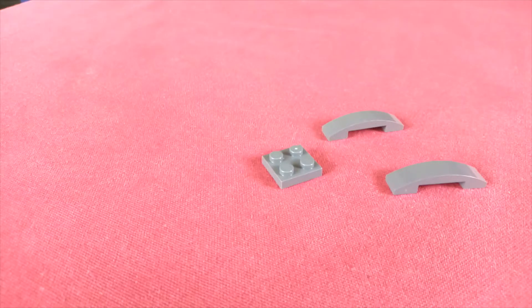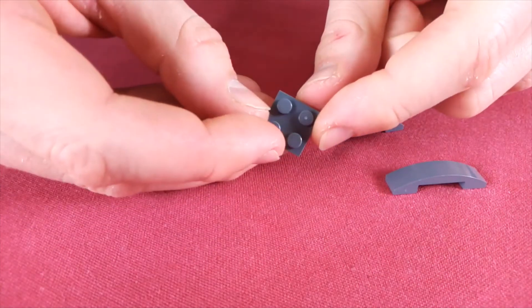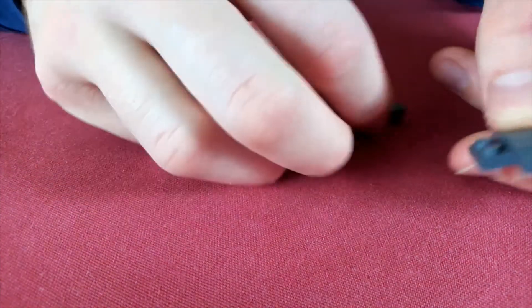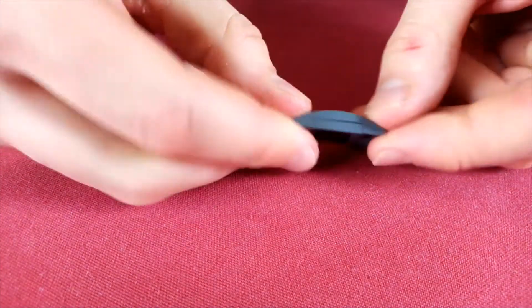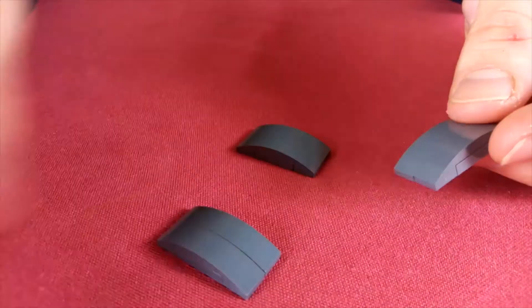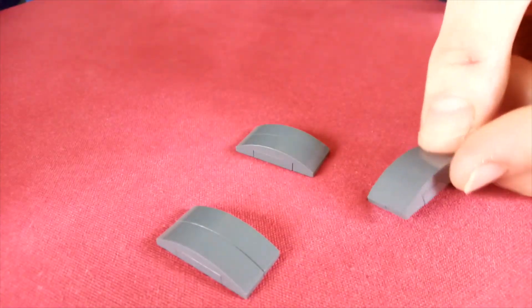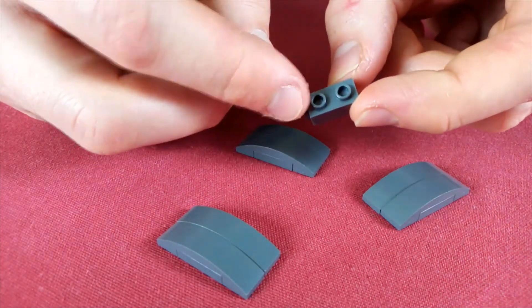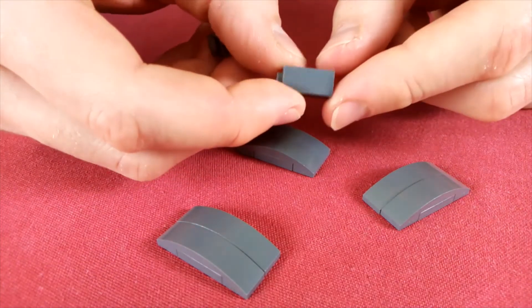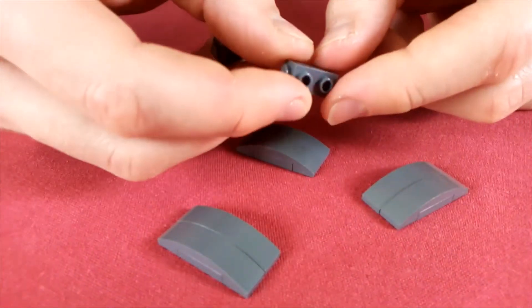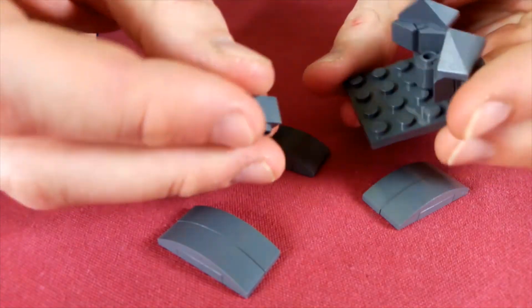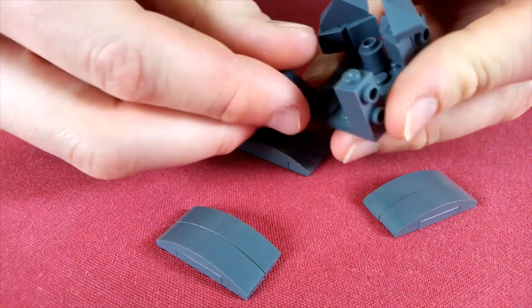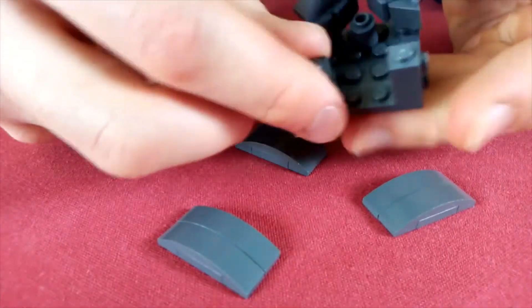Now for the sides of the turret, take a 2x2 plate and two of these curved pieces which sit on top of the plate just like that. You'll want three of these, they're going to make up the side of your turret. You're also going to want two of these SNOT bricks with the two studs on one side and smooth on the other three sides. These are going to sit in the other two corners of your turret, pointing out to the side just like that.